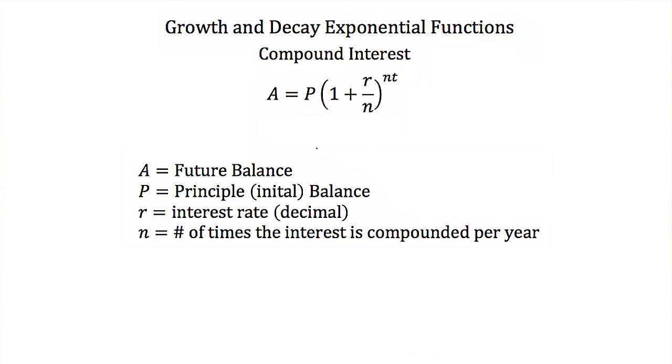Now a is our future balance, p is our initial balance or what we initially invest, r is our interest rate, and again, we always express that as a decimal. And then n is the number of times the interest is compounded per year or per t.